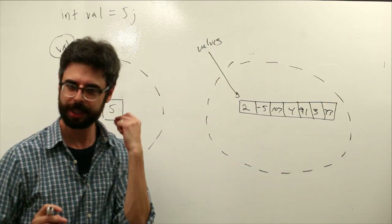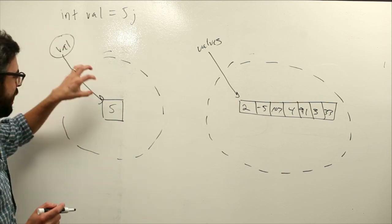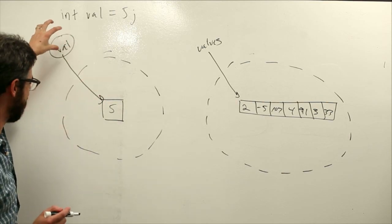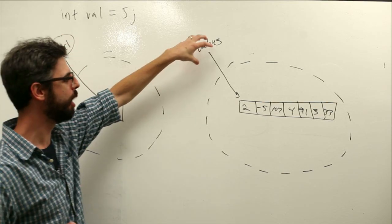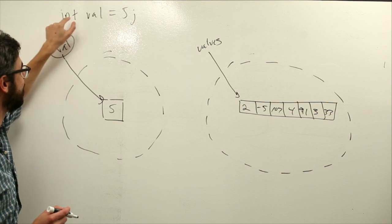How does this work? Hopefully this makes sense to us conceptually. This word is pointing to a single number, this word is pointing to a continuous list of numbers. We declared val as an integer, set it equal to 5.